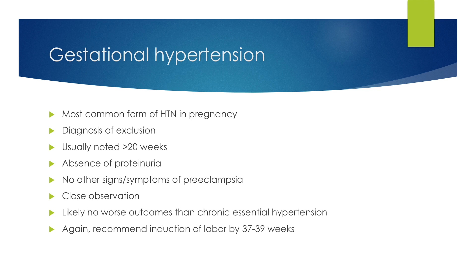Gestational hypertension is the most common form of hypertension in pregnancy, and it is a diagnosis of exclusion. The onset must occur after 20 weeks, or it is classified as chronic hypertension. In this setting, there are elevated blood pressures but no proteinuria and no other signs or symptoms of preeclampsia. These patients are observed closely, and outcomes are likely no worse than for chronic essential hypertension. They are also recommended to undergo induction of labor by 37 to 39 weeks.